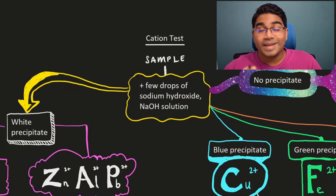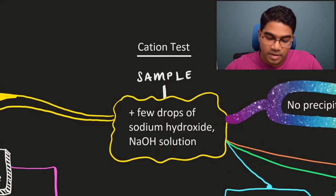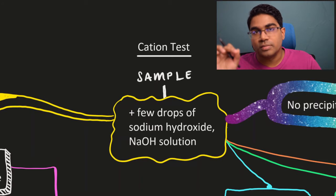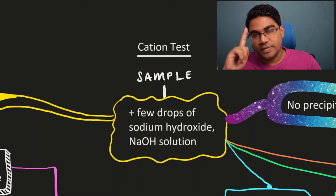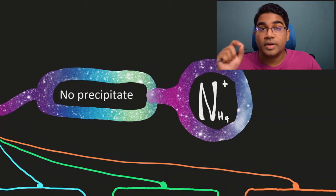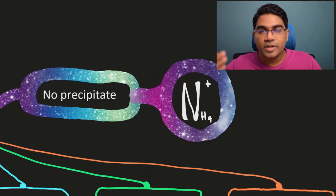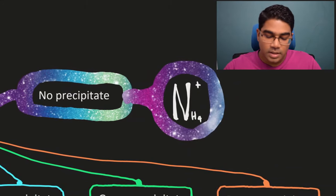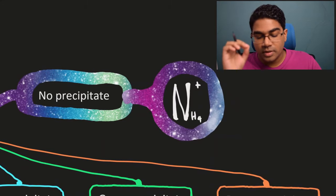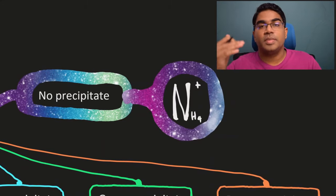Let's look at the cation test, the positive ion test. So let's say we started with a sample and we added just a few drops of sodium hydroxide solution. There are three possibilities here. The first possibility is there is no precipitate. When there is no precipitate after a few drops of sodium hydroxide solution, then we can deduce that there is ammonium ion in the sample. If ammonium ion is present, no precipitate will form.